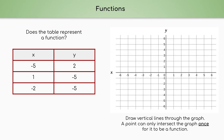Let's take a look at this table. Does this table represent a function? For it to be a function, every X must be paired with exactly one Y. Negative 5 is paired with 2, 1 is paired with negative 5, and negative 2 is paired with negative 5. So every X value is paired with exactly one Y value — yes, it is a function.